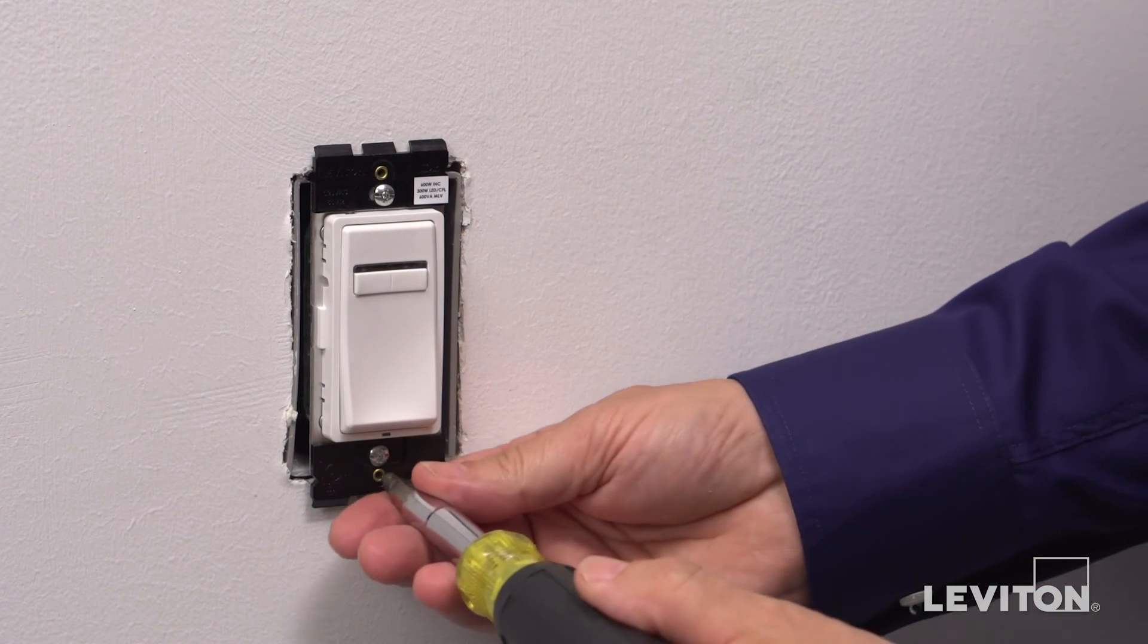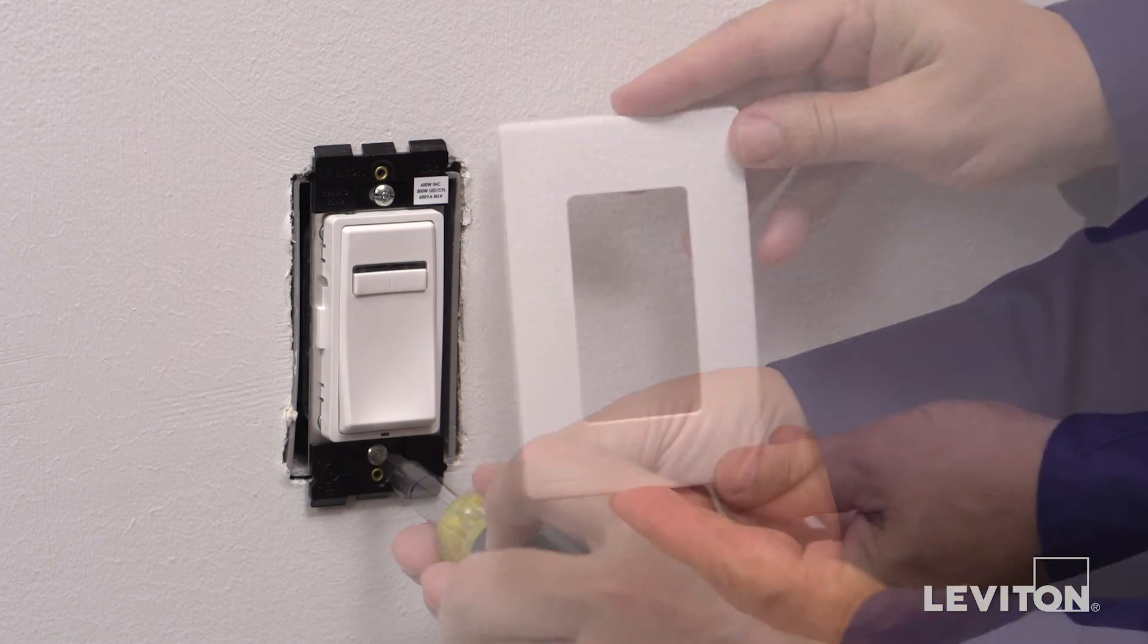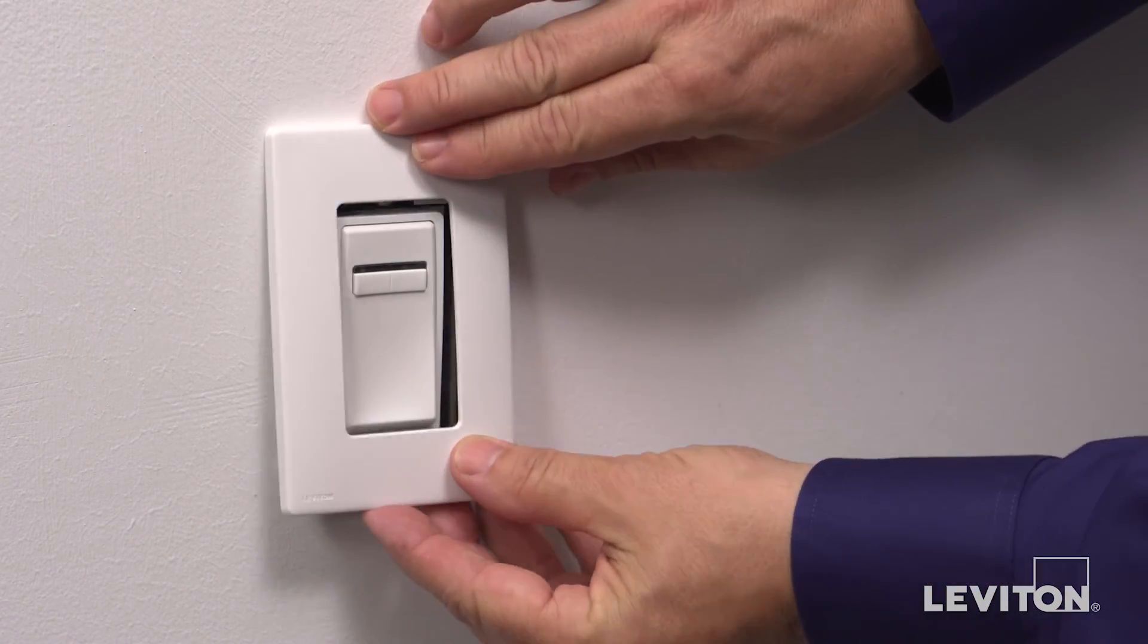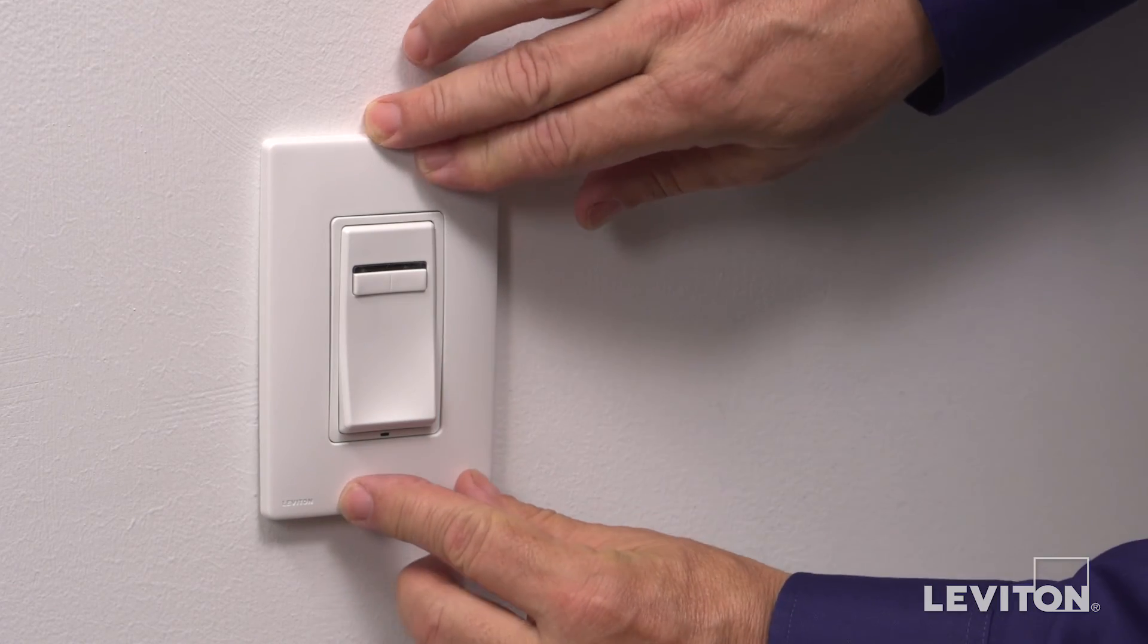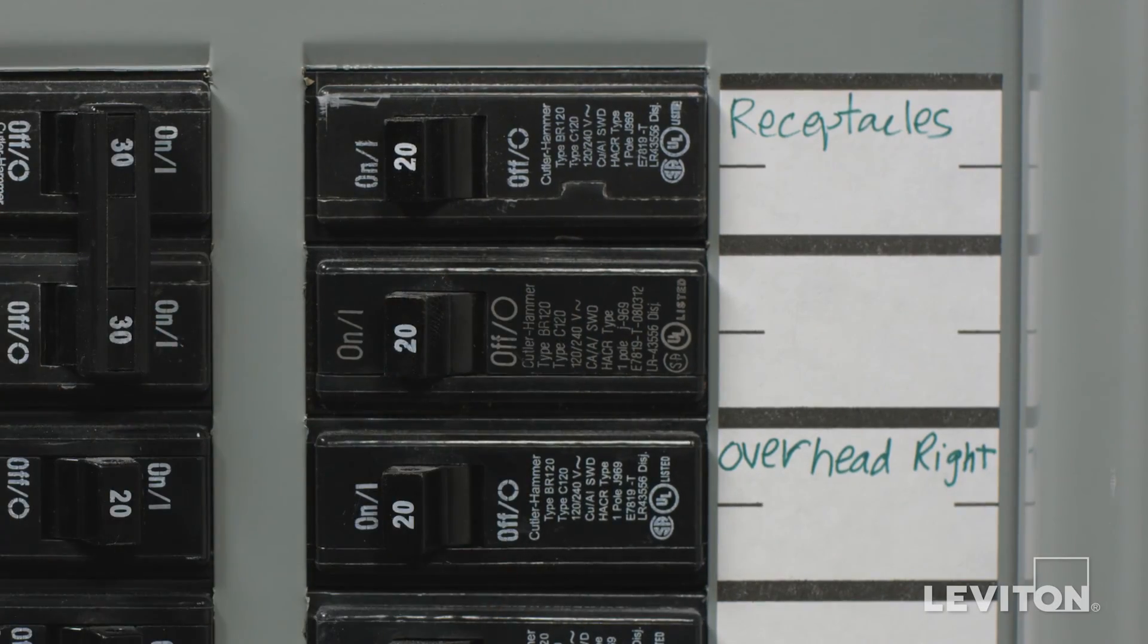Complete the installation by tightening the mounting screws into the wallbox. Snap on a Renew wallplate. Switch power back on at the circuit breaker.